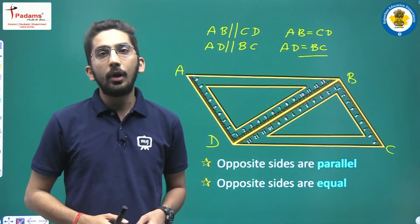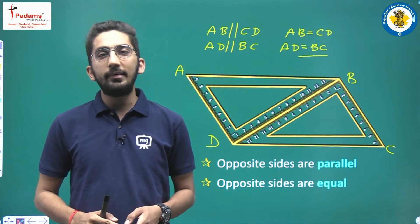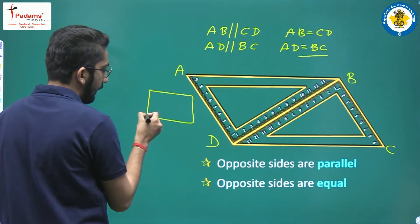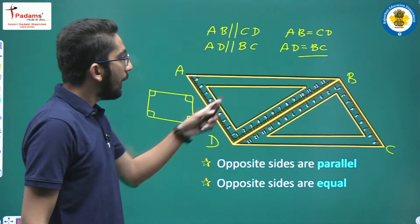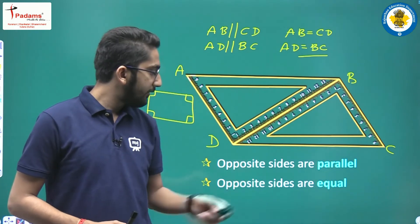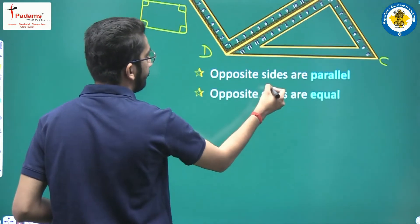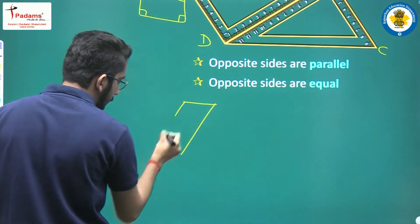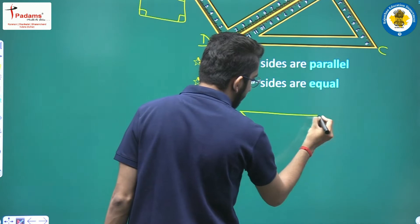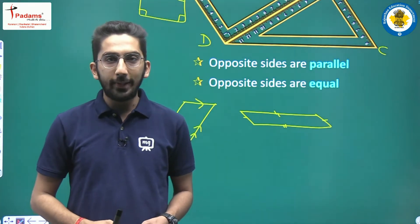Now you might ask: what is the difference between a parallelogram and a rectangle? Both have opposite sides parallel and opposite sides equal. The major difference is that in a rectangle, all angles must be 90 degrees, but in a parallelogram this is not necessary — the angles can be anything. You can draw parallelograms in many different orientations as long as both pairs of opposite sides are parallel and equal.